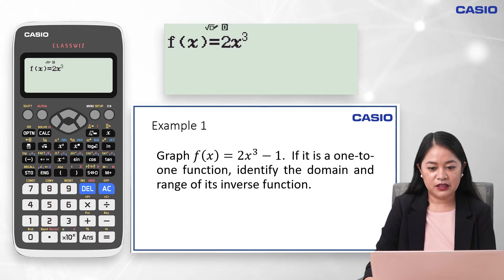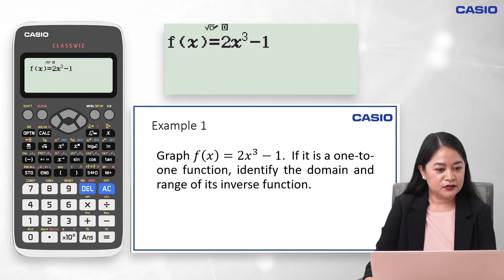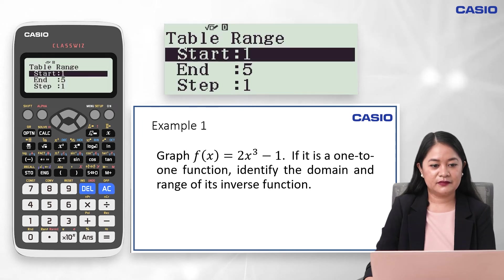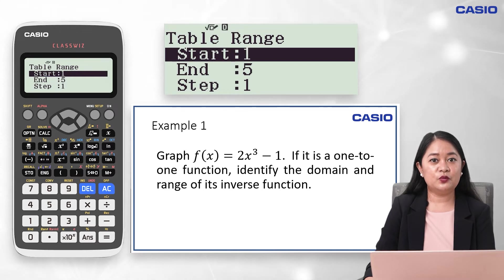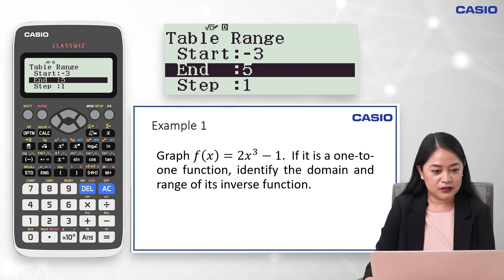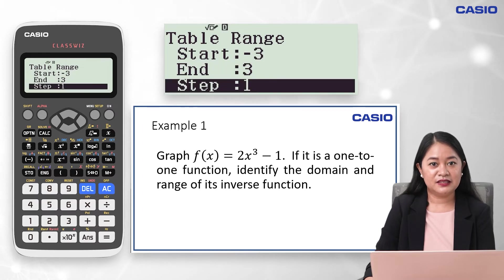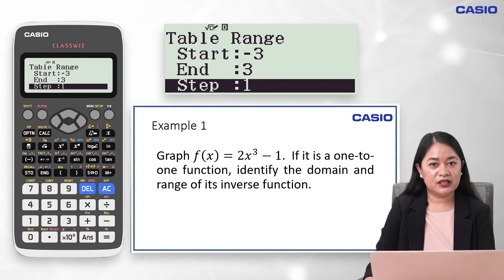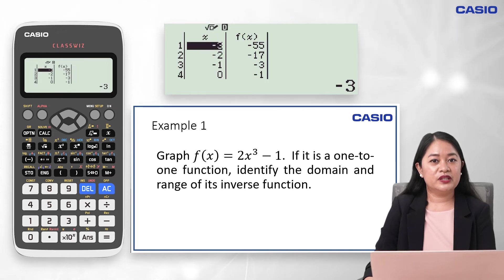Press the right arrow key, then minus 1. After that, press the equal sign twice. Now assign values for x by completing the table range — let's say negative 3 to positive 3. Press the equal button to input each value: negative 3 equals, 3 equals. For the interval of values, leave this as one unit, then press the equal button again to reveal the table.